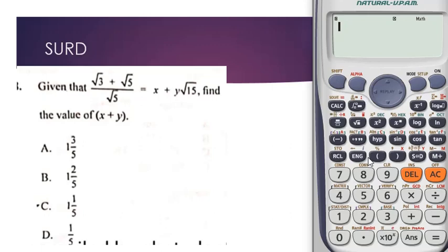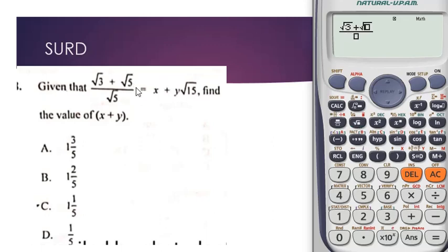This is a surd question. First, reset the calculator: shift, nine, three, equal, then AC. With surd questions all you have to do is punch the exact question on the calculator and you arrive at the correct answer. So for this question you punch this and click on the root sign — root three — then punch two, click plus, click the root sign again, punch five, then click the down arrow to move to the denominator, click root five, then click five.